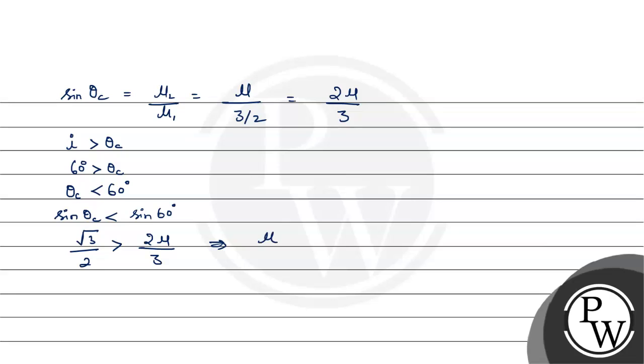This gives us the limit of mu. Mu is less than 3 root 3 over 4. And this is our final answer. Let's highlight it here.